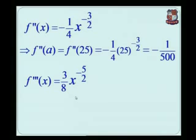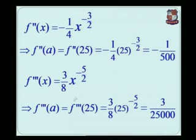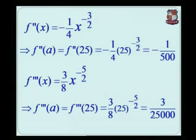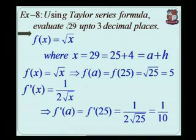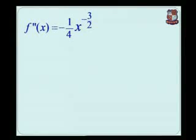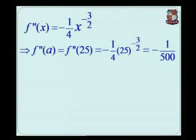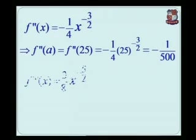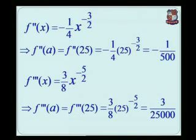We find the value of the third derivative at the point a. So f'''(25) is equal to 3 by 8 times 25 raise to minus 5 by 2. Again, replacing 25 by 5 squared, 2 cancels and we get 5 raise to minus 5. The result gives us 3 upon 25,000. So in this calculation: f(a) equals 5, f'(a) equals 1 by 10, f''(a) equals minus 1 by 500, and f'''(a) equals 3 by 25,000.